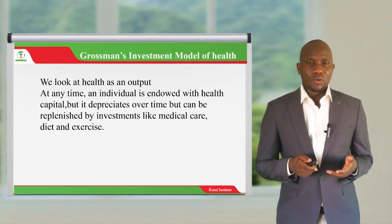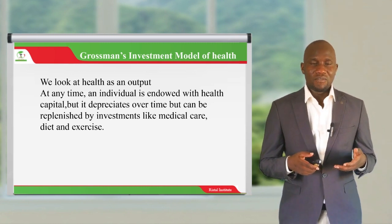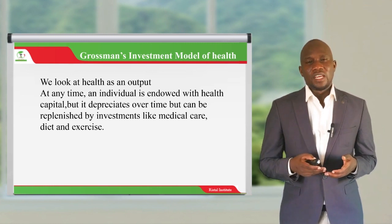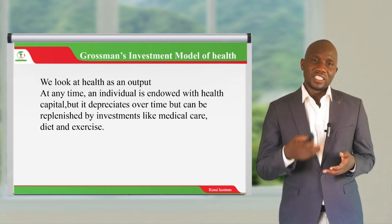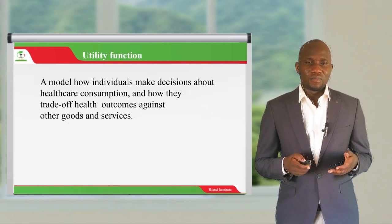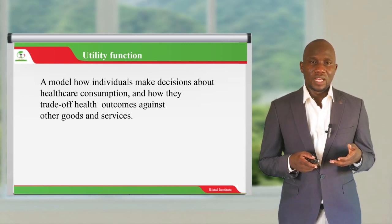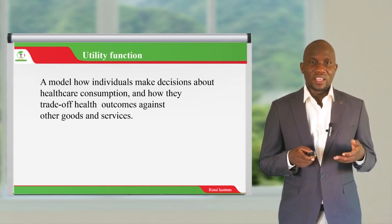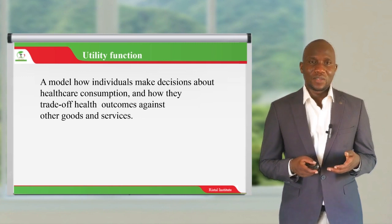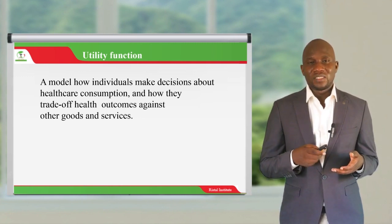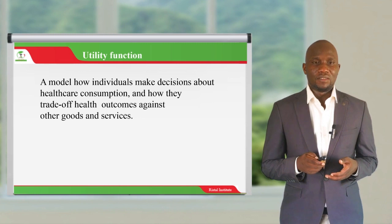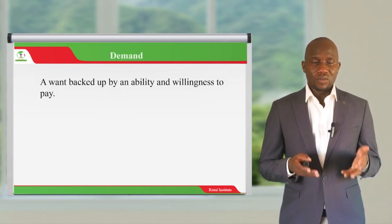Grossman's investment model helps us look at health in terms of outputs and inputs. Everyone has what we call health capital, and this stock or investment can be replenished over time. Individuals can increase their stock by seeking proper medical services for their illnesses. Individuals make trade-offs between health and other goods, because health can be regarded both as an investment and as a good — and that is the concept of the utility function.